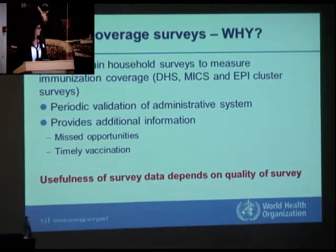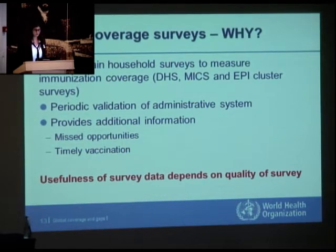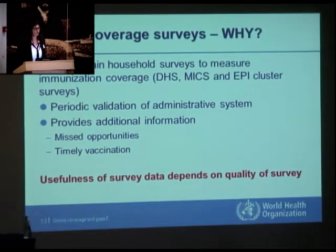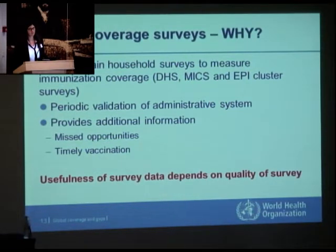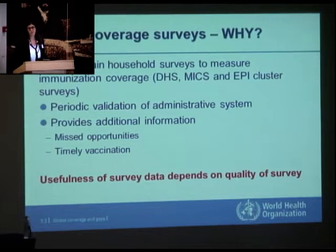Coverage surveys are important. There are three main household surveys measuring immunization coverage: the DHS, the MICS surveys, and the EPI cluster surveys. They are a very good way to periodically validate an administrative system and provide additional information about children who are not vaccinated or haven't completed their vaccination schedule. However, surveys have limitations — they provide information much later than the actual intervention happened, usually measuring coverage from a previous birth cohort, and taking additional time to collect, analyze, and publish. So they often give information only a year or two after the intervention, which may be too late for managing the program.